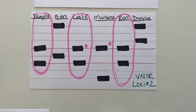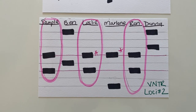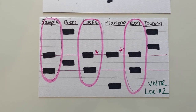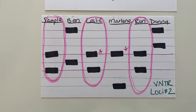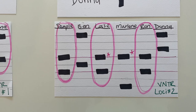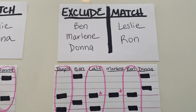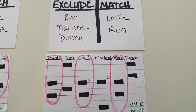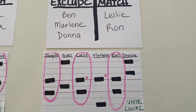Let's take a look at our next loci. Here we find that a full match at each allele exists for Leslie and Ron. Again, we can see that Marlene and Leslie are related because one of their alleles matches. Therefore, Ben, Marlene, and Donna, who are not a complete match, fall out of our suspect list, and Leslie and Ron remain in suspicion.